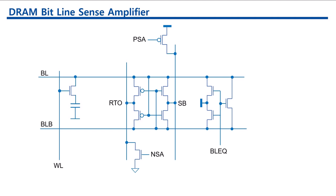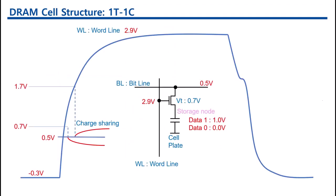DRAM operation starts from word line enable. This is an active command. Right after the word line enable, the charge sharing happens between the storage capacitor and the bit line capacitor.